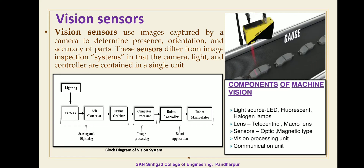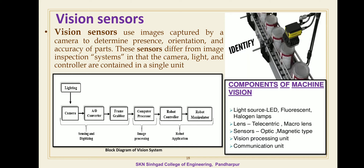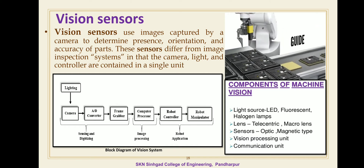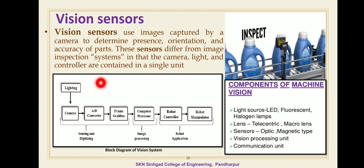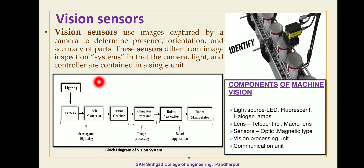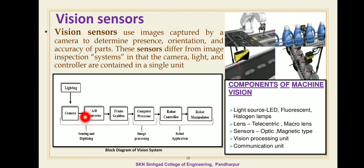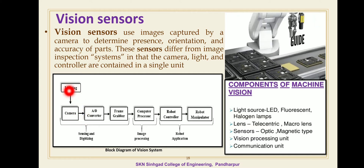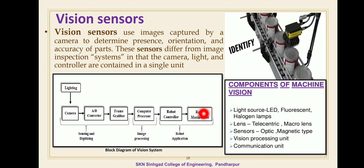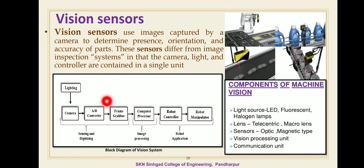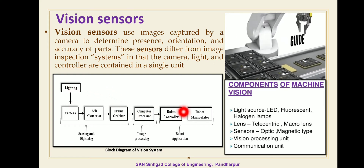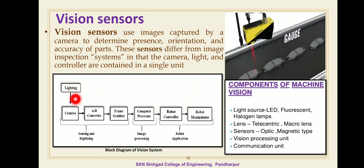Now, the different components of vision sensor. This block diagram shows the robot vision sensor or vision system. The block diagram starts from lighting and ends with the robot manipulator. There are basically seven different components of a robot vision sensor or robotic vision system.